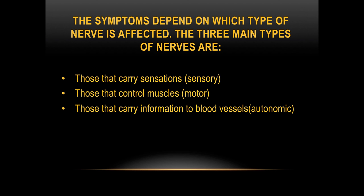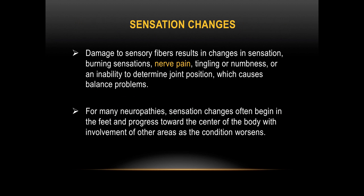Symptoms are dependent on what actual nerve is affected. We have sensory nerves, which carry sensation; motor nerves, which control muscles; and autonomic nerves, which carry information to the blood vessels. If your sensory fibers are affected, it's going to create things like tingling, numbness, and balance issues — the sensory ataxia I mentioned. Usually for a lot of neuropathies, sensation changes often begin at the feet and then will progress towards the center of the body as the condition worsens. Many of you know that neuropathy is a progressive degenerative condition, and through time you're going to get other symptoms spreading throughout the body.